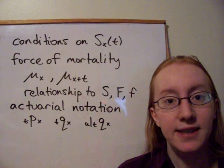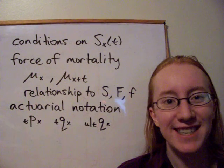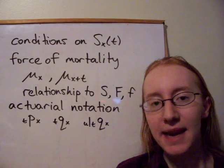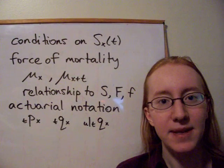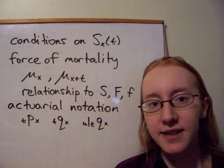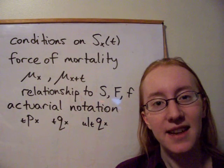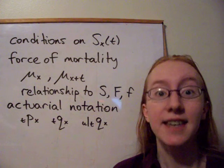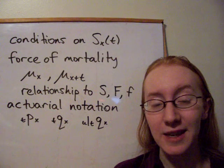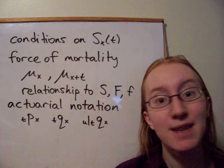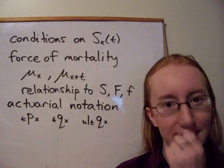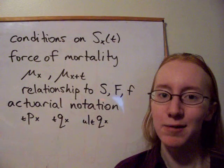The last thing we looked at was the actuarial notation. Three particular items we looked at were: tpx, which is simply the probability that a life age x right now survives at least t years; and tqx, which is the opposite — the probability that a life age x right now doesn't make it to t years in the future. tpx and tqx are mutually exclusive events and one of them has got to occur, so tqx plus tpx equals one.